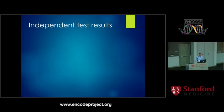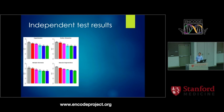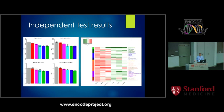We also did an independent test on GRASP SNPs. Comparing four diseases, our method seems to be slightly better than the competitors, and out of 36 diseases, in 22 of them our method shows the best results.